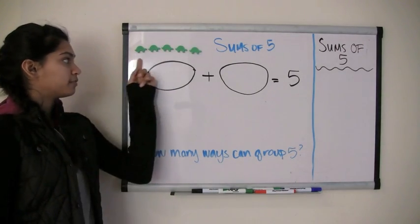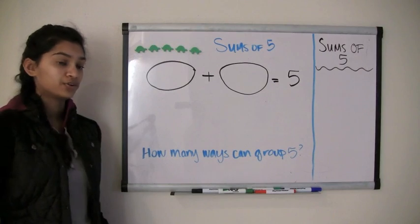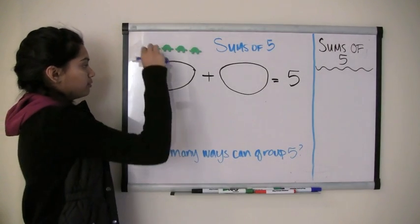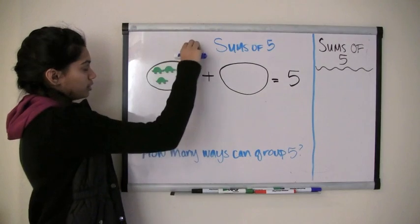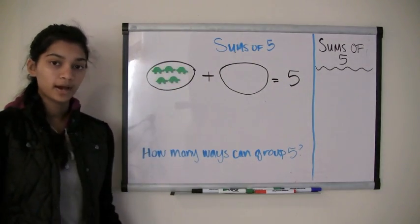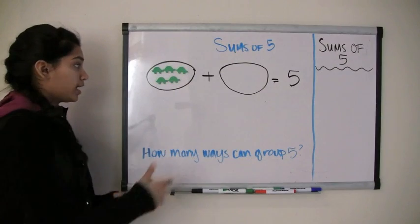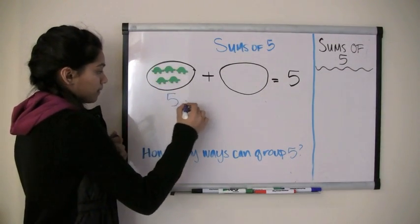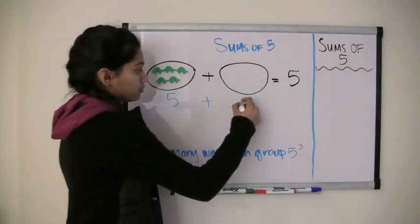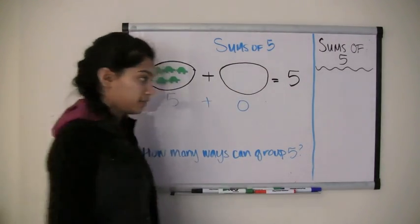So here I have five turtles. Let's say I put all five turtles in the first area. I have one, two, three, four, five. But now I have no more turtles to put in this area. So we have one, two, three, four, five plus zero. So five plus zero is our first sum because it adds up to five.